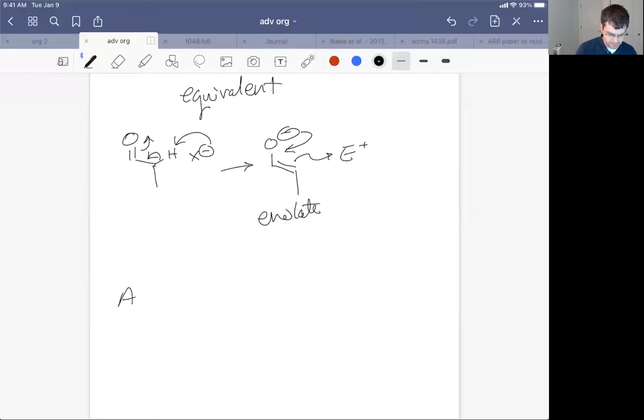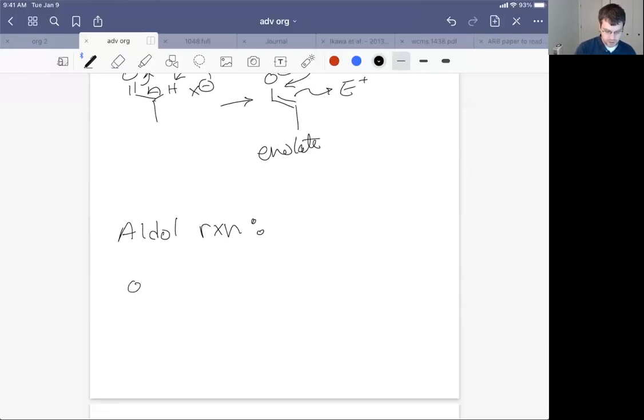So an aldol reaction looks like this. We're going to take our enolate and allow it to react with another carbonyl. That carbonyl is usually like an aldehyde or something. So we take our enolate or enolate equivalent and do an aldol reaction. And if you look, this looks to be the exact same reaction that we saw in organic chemistry.